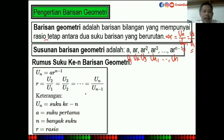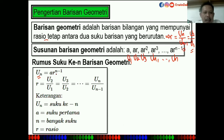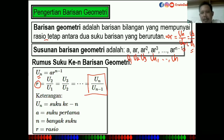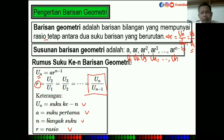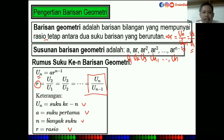Rumus untuk menentukan suku ke-N adalah UN = AR pangkat N-1. R adalah rasio, yaitu UN dibagi UN-1. A adalah suku pertama, N adalah banyak suku, dan R adalah rasio. Perbedaan dengan barisan aritmetika: aritmetika berkaitan dengan selisih (beda), sedangkan barisan geometri berkaitan dengan pembagian.